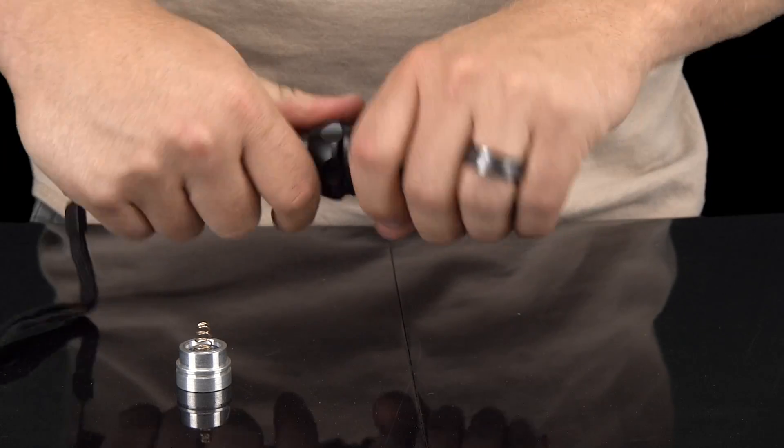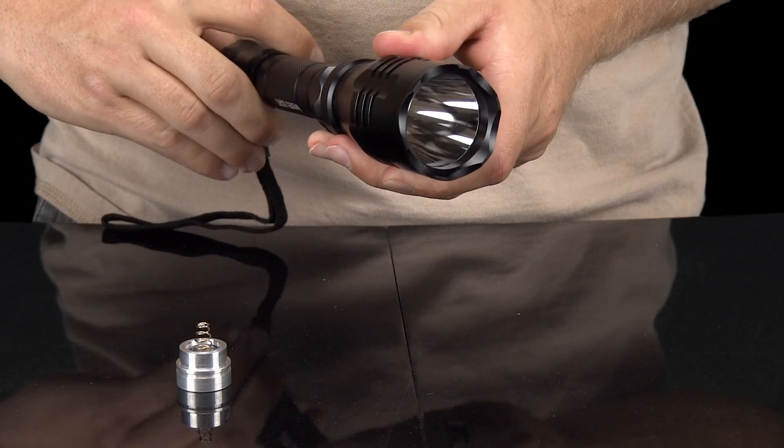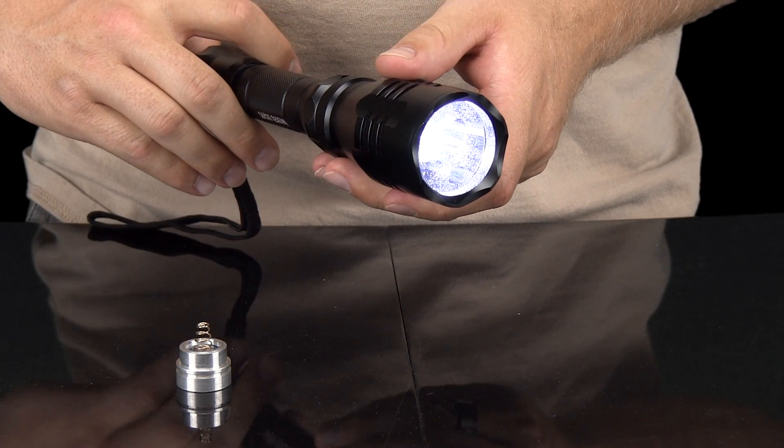Once the contact spring is installed correctly, you can reattach the bezel to the light housing. You are now ready to use your W400 light.